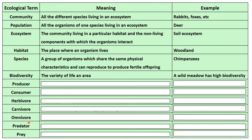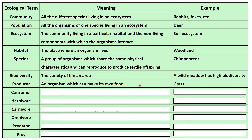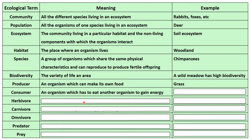A producer is an organism which can make its own food — we can't do that, but plants can. So basically organisms which can carry out photosynthesis. For example, grass. We, on the other hand, are consumers. In order for us to gain energy, we need to eat another organism. So an example would be a fox. A consumer is basically everything except plants and other organisms which can carry out photosynthesis.